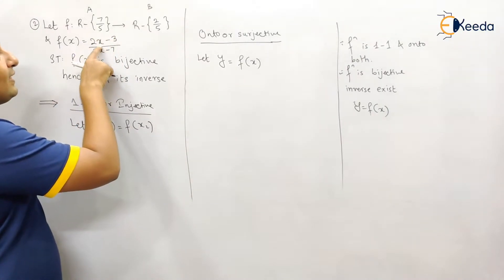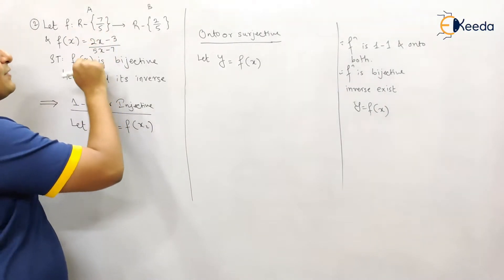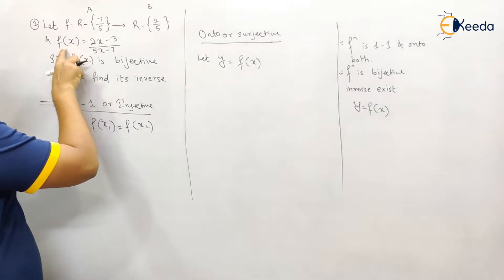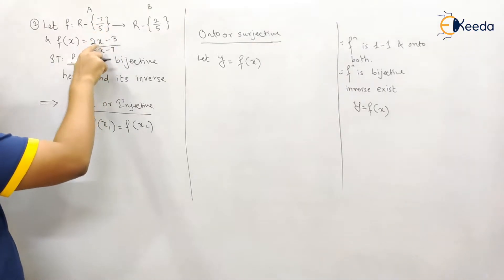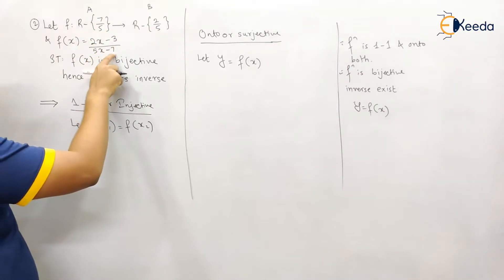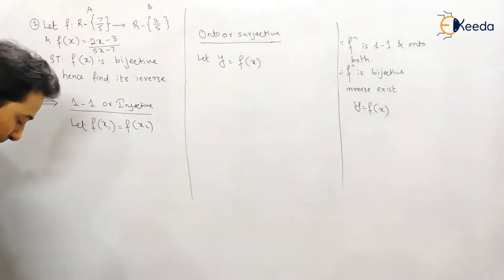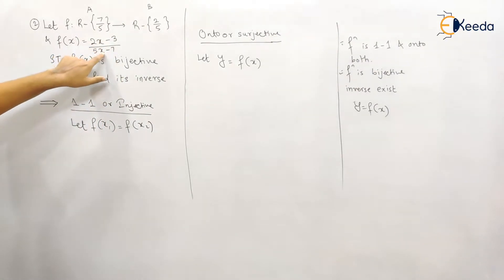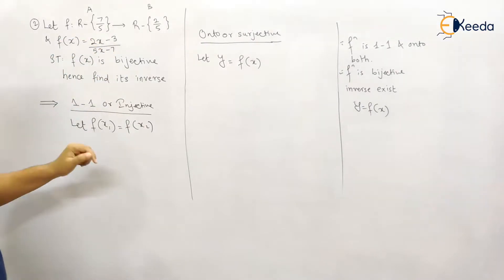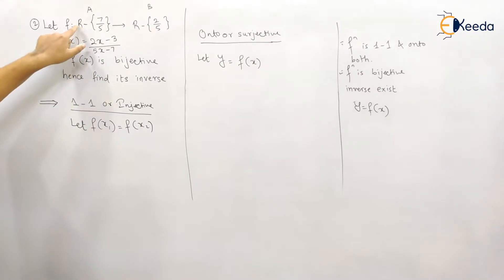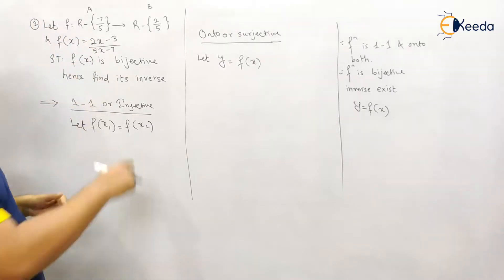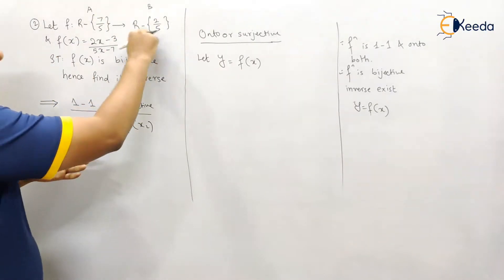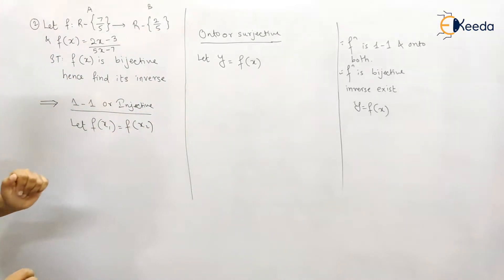If you put x as 7/5, since this is the value of x for set A, the denominator becomes 7 minus 7, which is zero. Anything divided by zero becomes infinite. Therefore, in set A you cannot have the value 7/5, because substituting it makes the function undefined. That is why it is written as R minus {7/5}.